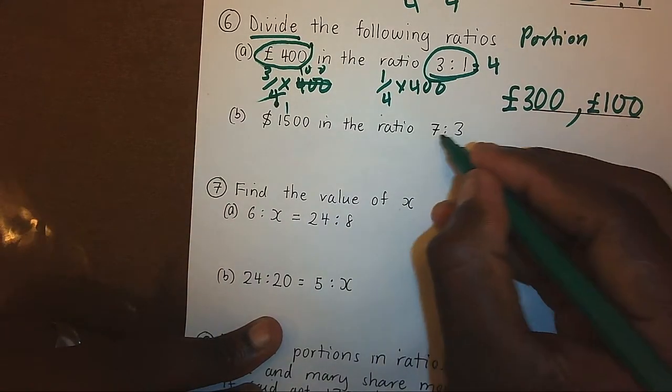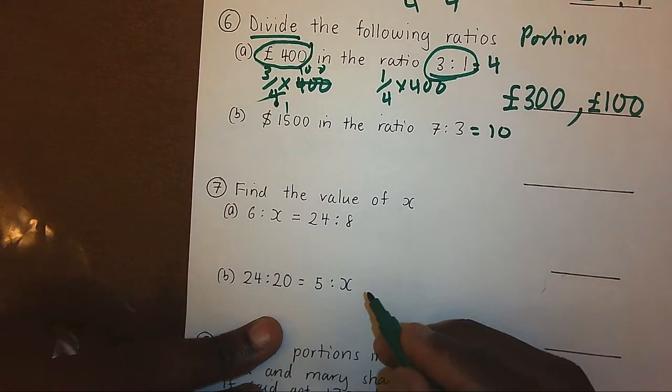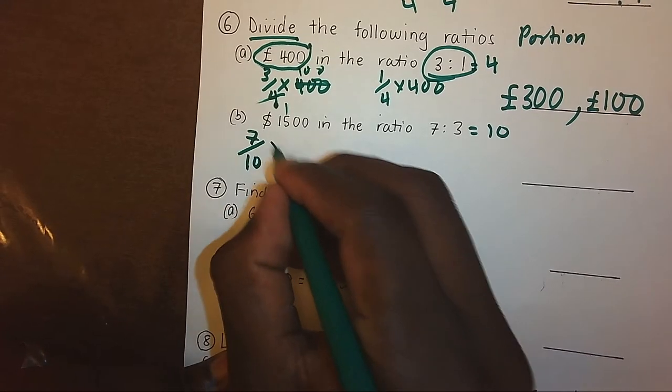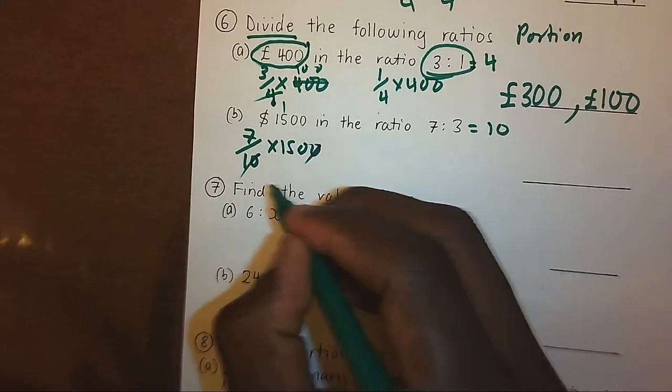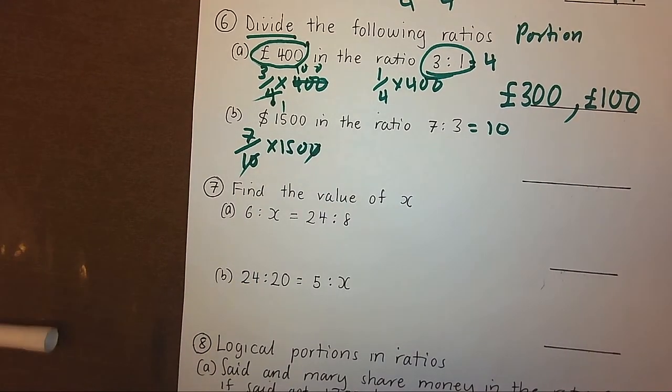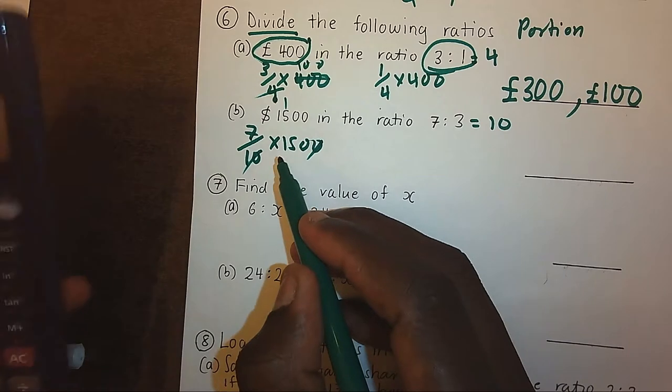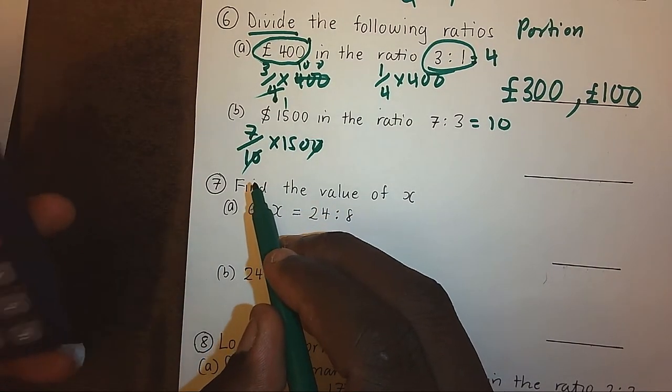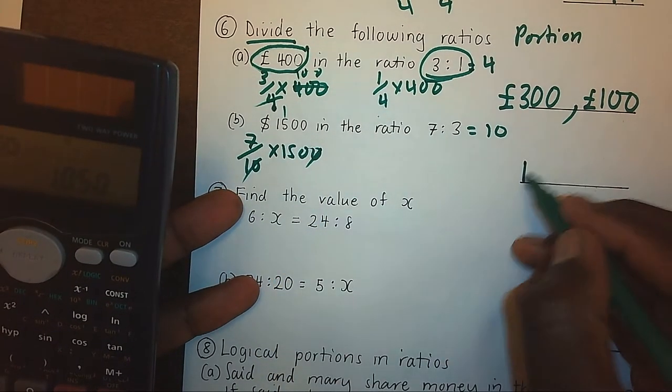The same situation here. The total ratio will be 10. Meaning the first portion will be 7 over 10 times 1500, giving me 7 times 1500. I simplify by canceling one zero and remain with 150, so 150 times 7 gives me 1050.